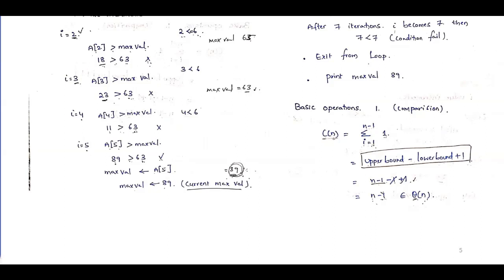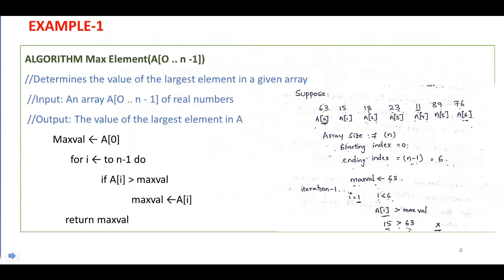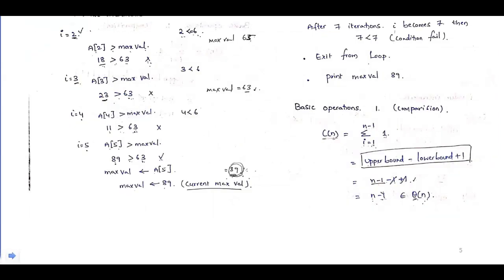Using the formula: upper bound minus lower bound plus 1, we get (n-1) - 1 + 1 = n - 1. Eliminating the constant and taking the dominant term, this is Θ(n). So the time complexity of the max element algorithm is Θ(n).